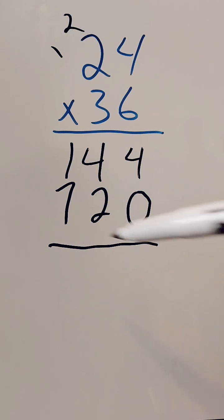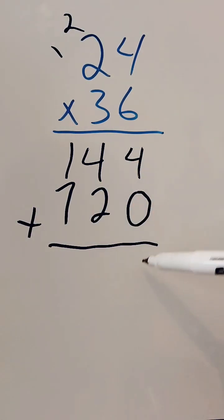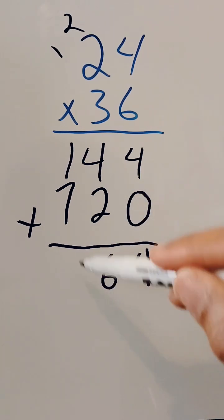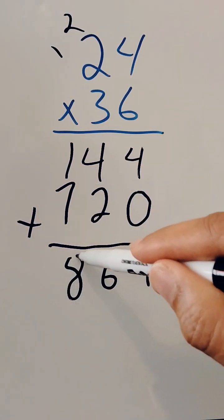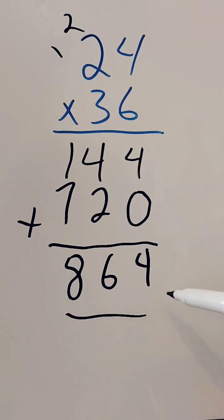So now all we have to do is add these up. We add these up like this, and we're going to have 4. 4 plus 0 is 4, 4 plus 2 is 6, and 7 plus 1 is 8. That's the answer right there. 864 is the answer.